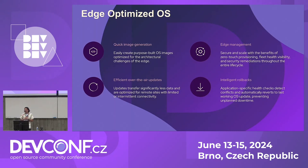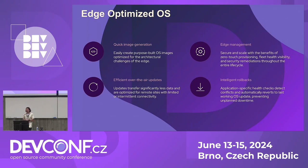It's really important to see what capabilities an edge-optimized operating system needs to provide. At the edge, repeatability is critical — we need to ensure that 10,000 devices are running the same image, the same tools, the same software. So we need to move to an image-based operating system instead of a package-based one. This is a characteristic that is really needed for the edge, and it's been a topic throughout today's keynote as well.